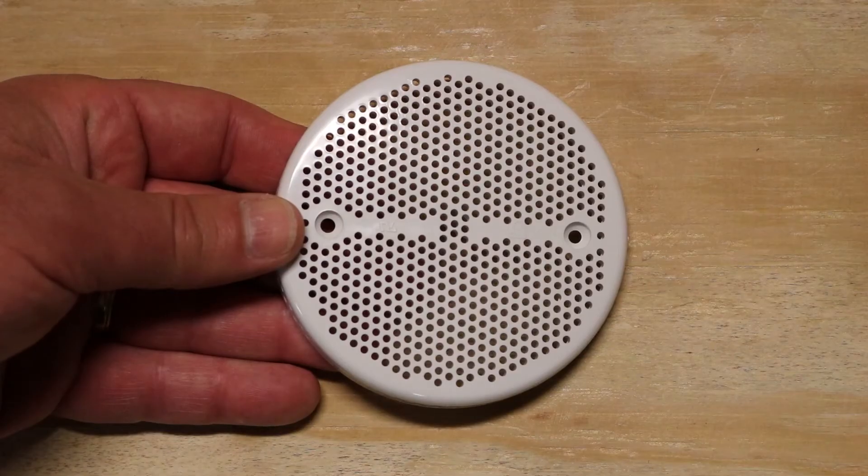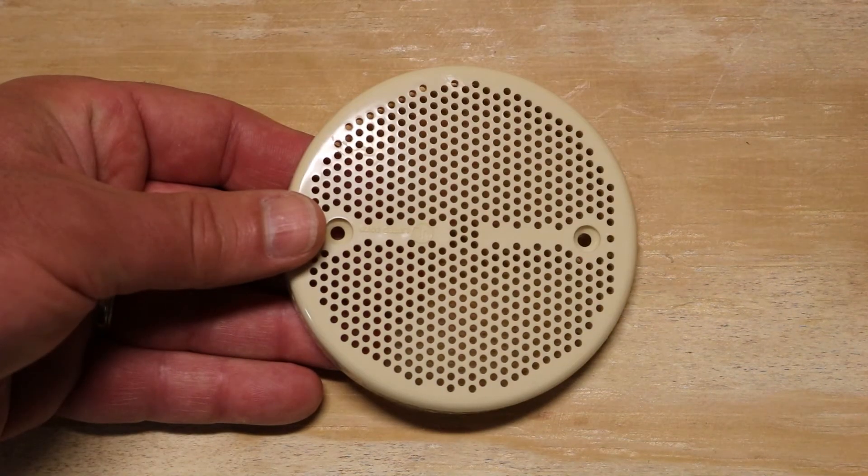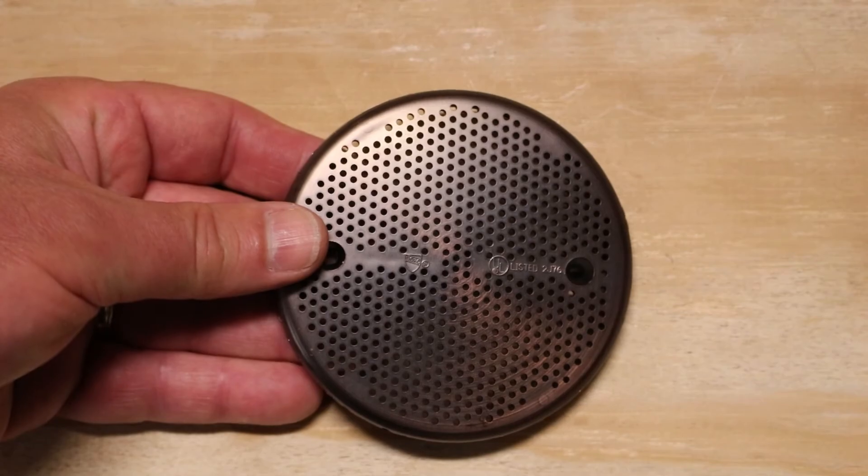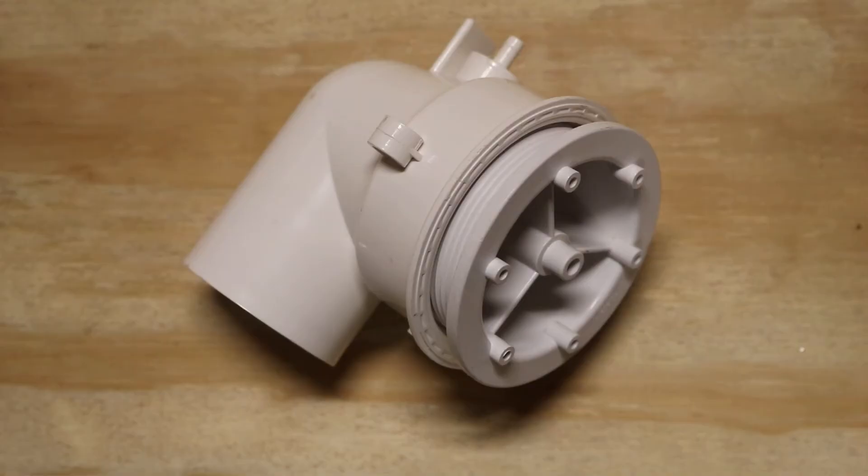The colors that are available for this suction assembly come in white, biscuit, bone or almond, oil rubbed bronze, chrome, and we also have a satin nickel that is also available. And that's everything you need to know about this retrofit kit we've come up with for the old discontinued American Standard suction assembly.